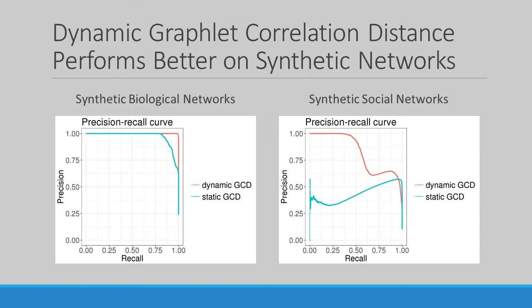When we evaluate dynamic graphlet correlation distance on synthetic temporal networks from social and biological domains, we find that our method is much more effective for determining the similarity between temporal networks than current methods.